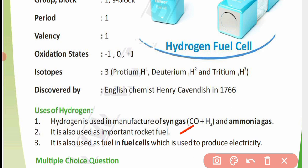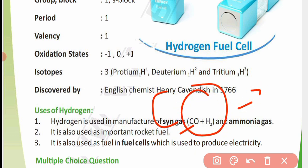Hydrogen has many uses. Syngas is the combination of carbon monoxide and hydrogen. Hydrogen is used as a rocket fuel and in fuel cells as a fuel to produce electricity.